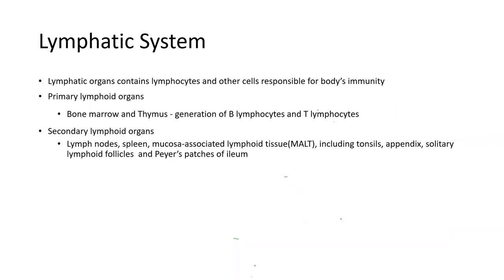Lymphoid organs contain lymphocytes and other cells responsible for the body's immunity. There are two types: primary lymphoid organs, which include bone marrow and thymus, responsible for generation of B-lymphocytes and T-lymphocytes. Secondary lymphoid organs include lymph nodes, spleen, mucosa-associated lymphoid tissue — which includes tonsils, appendix, solitary lymphoid follicles, and Peyer's patches seen in the ileum.